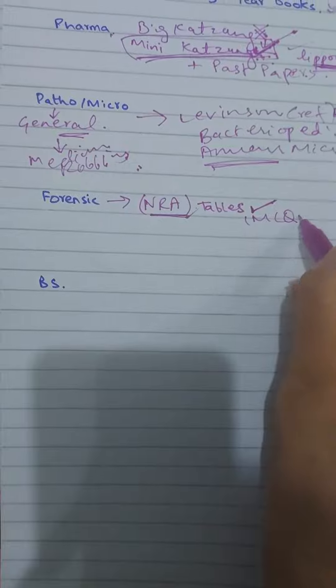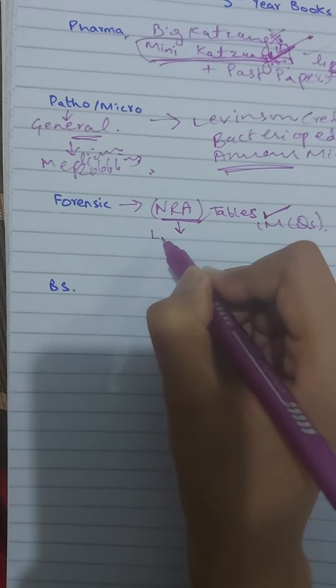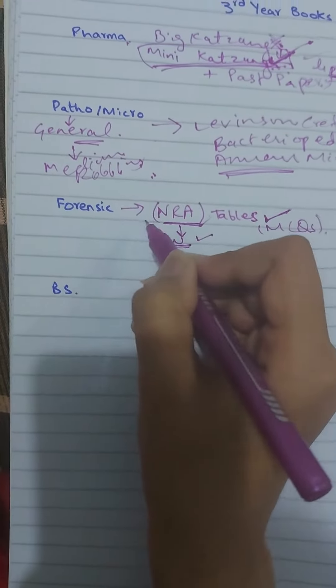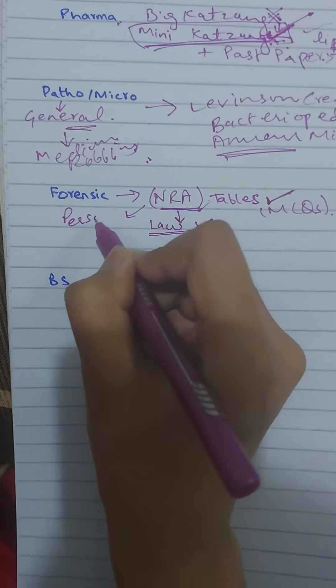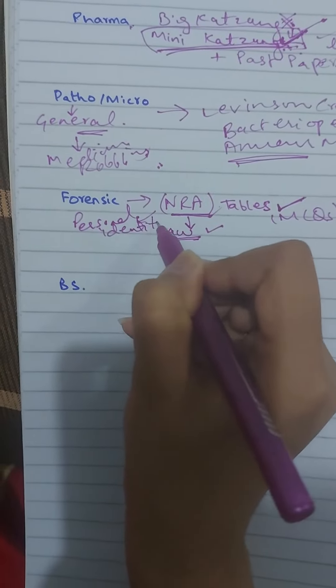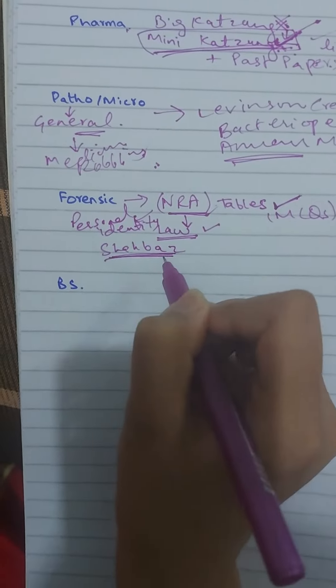So you have to make the tables last one and this book chapter is law. Law you have to make it here. Personal identity, give it a read, it is a good thing and this book is also a good thing. Next book which I will tell you about, this book you have to take.